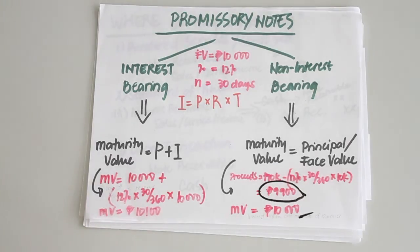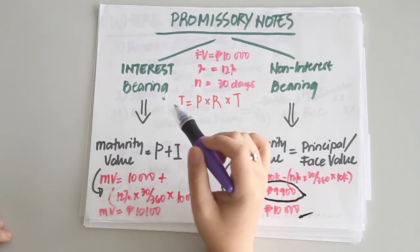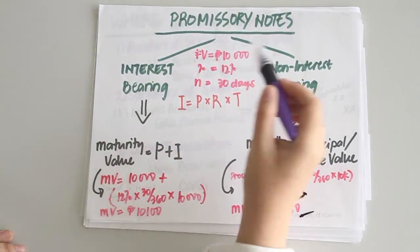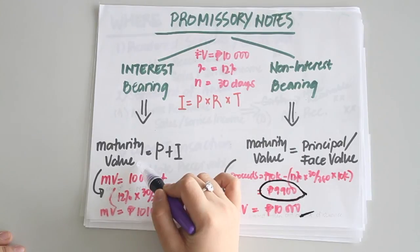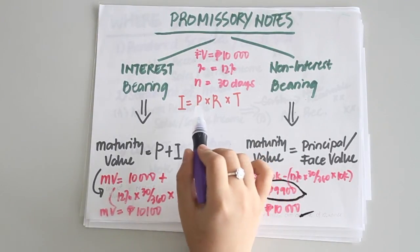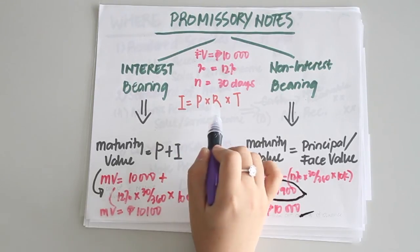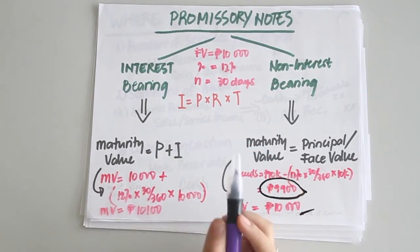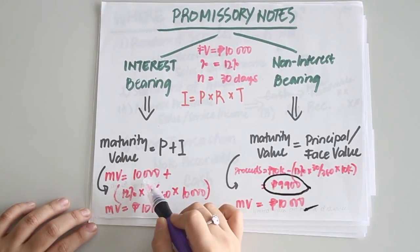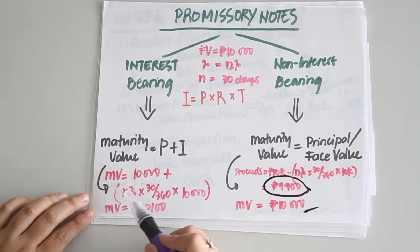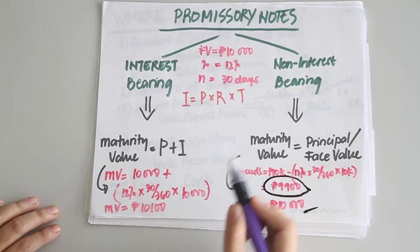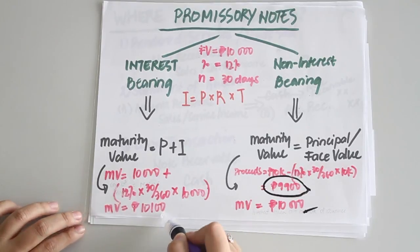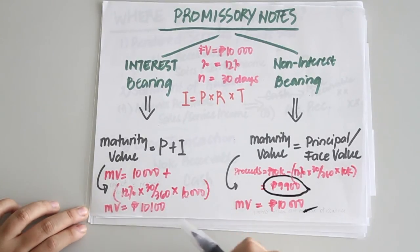Here is an example using a promissory note with a face value of 10,000 pesos, an interest rate of 12%, and a period of 30 days. For an interest bearing note, proceeds on the date of issuance equal the face value of 10,000 pesos. The maturity value equals principal plus interest: 10,000 + (12% × 30/360 × 10,000), giving a total maturity value of 10,100 pesos.